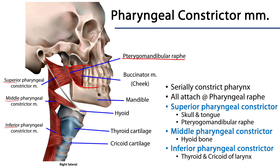Buccinator is the muscle of the cheek. One can see how the oral cavity and the pharynx are going to be contiguous with one another from an outer muscular architecture sense.